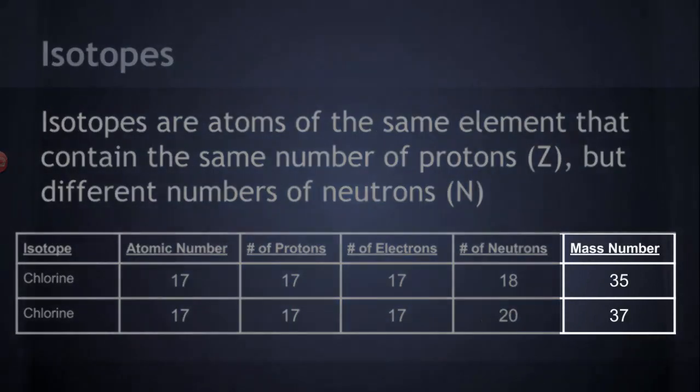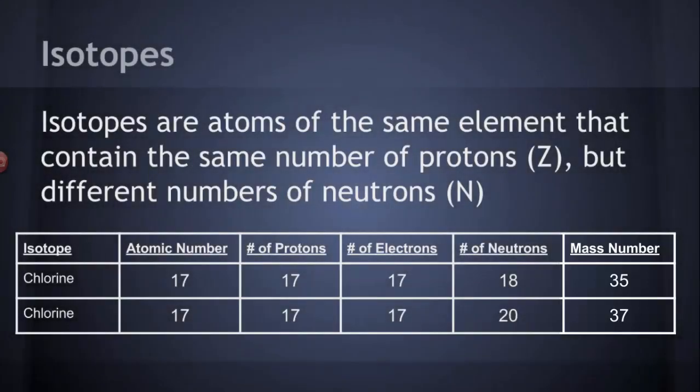We have a concept called mass number. The mass number is nothing more than the number of protons plus the number of neutrons in the nucleus of an atom. So the mass number of the chlorine atom with 18 neutrons would be 17 protons plus 18 neutrons, that's 35. And the mass number of the chlorine that has 20 neutrons would be 17 protons plus 20 neutrons, that's 37.